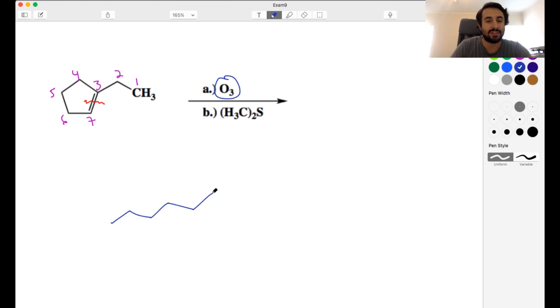We'd better have a seven carbon linear product. So let's go one, two, three, four, five, six, seven. And then on carbon three, with ozonolysis, each of the carbons that was participating in the pi bond is now a carbonyl carbon.